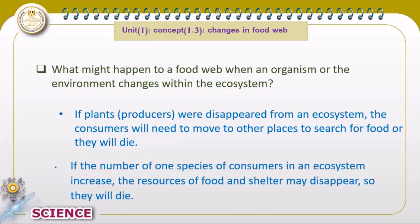Now let's move to the new concept, which is concept 1.3. In this concept we are going to talk about changes in the food web — that's the third concept in our curriculum. First we start with the food chain and understand the difference between a food chain and a food web. A food web consists of different interconnected food chains.